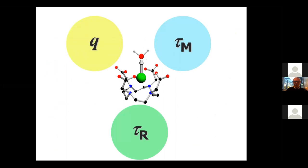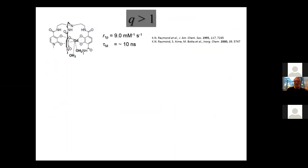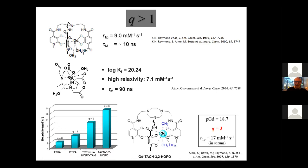Finally, there is the Q value — the number of coordinated water molecules. Relaxivity scales up with Q. But we cannot increase at will the number of coordinated water molecules because we need to maintain gadolinium tightly chelated to the organic part; otherwise gadolinium is toxic. Systems with Q equal to two and even Q equal to three have been reported. This provides a basic relaxivity three times that of the clinically used agents.